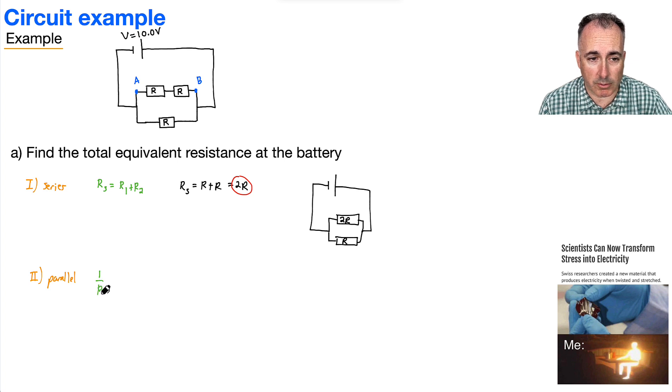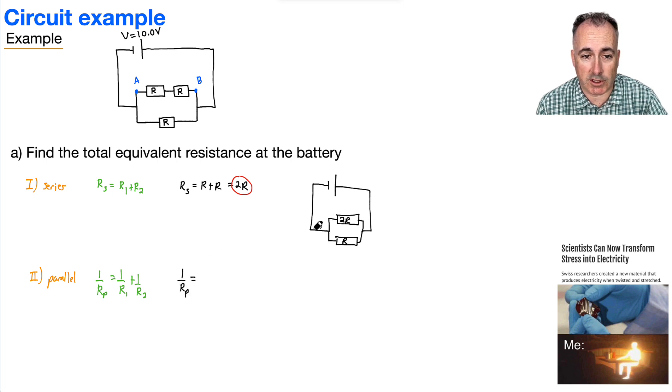We say that 1 over RP, this is the equation we get in our data booklet, equals 1 over R1 plus 1 over R2. And we would keep going if we had more, but we only have two of them. So here's where it gets a little bit sneakier. That means I have to say 1 over RP is going to equal, let's see, the first one is 1 over 2R. The second one is just 1 over R.